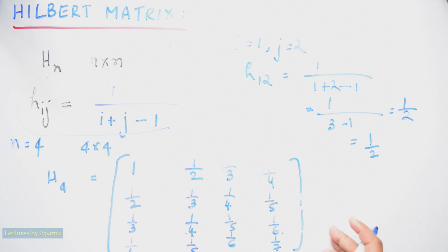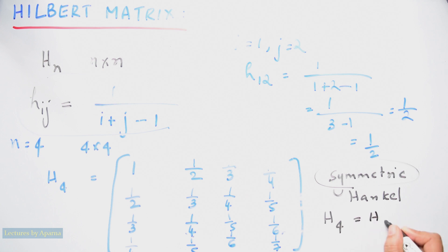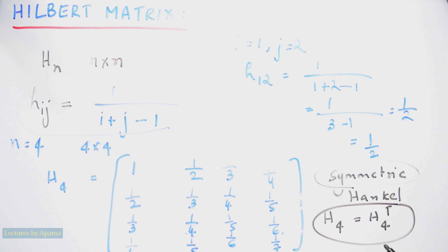A Hilbert matrix will be a symmetric matrix as well as a Hankel matrix. Symmetric matrix means that if H4 is the matrix, then H4 will be equal to H4 transpose. If this condition is satisfied then it will be a symmetric matrix. H4 transpose means we have to interchange the rows and columns of the matrix. If you interchange the rows and columns of this matrix you should get the same matrix. Let us see if it is symmetric.